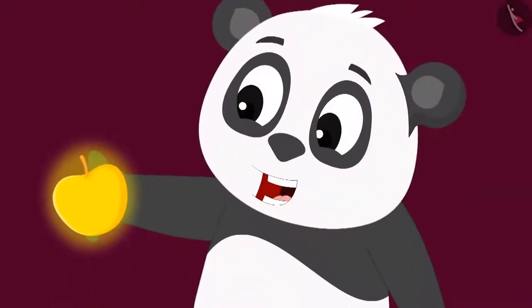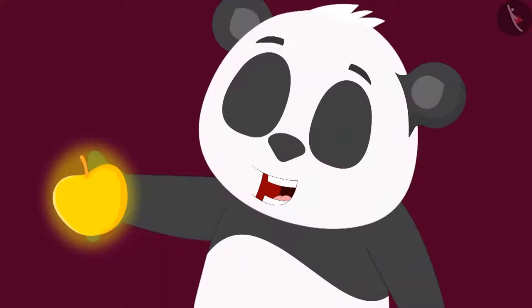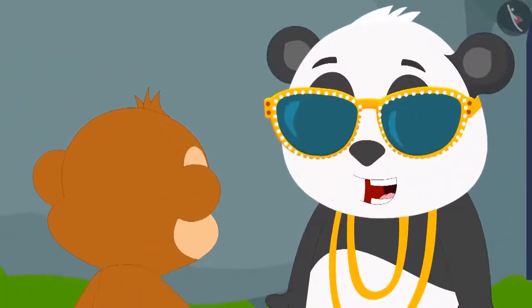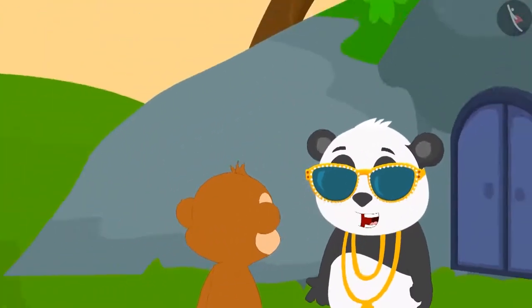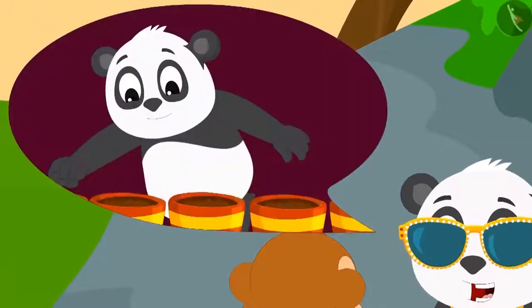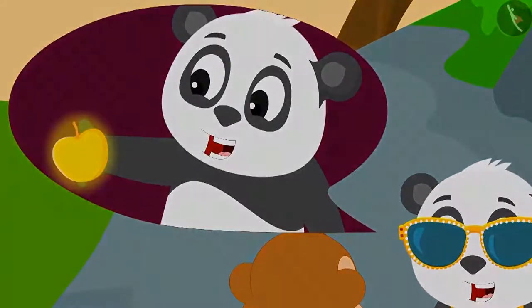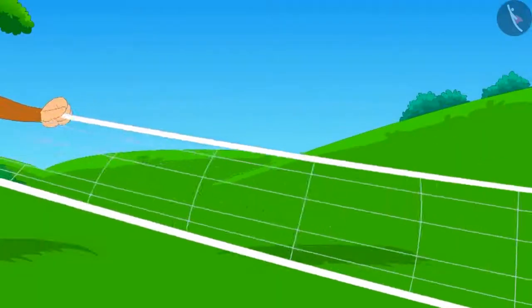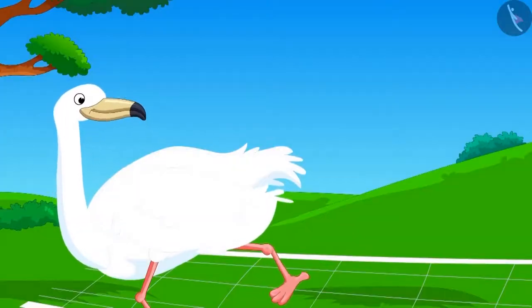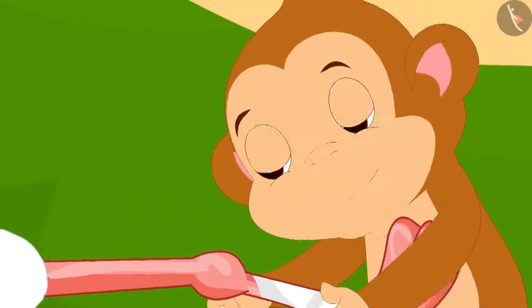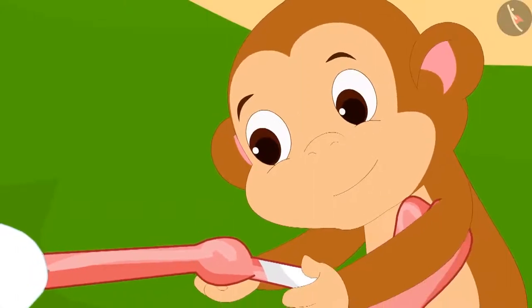Babban wanted to know the secret behind Golu becoming so rich suddenly. Golu narrated the entire story. The next day, Babban injured the bird by laying a trap, then took care of the bird just like Golu.